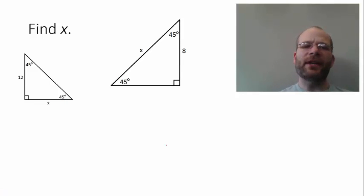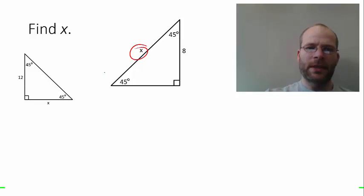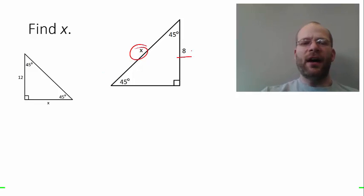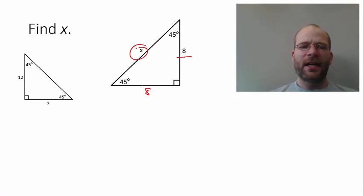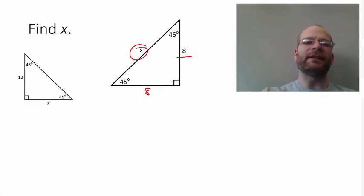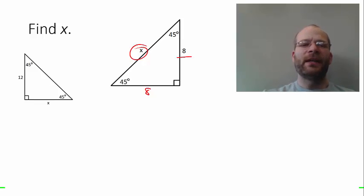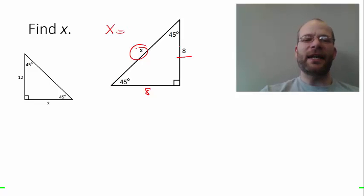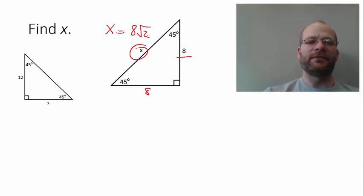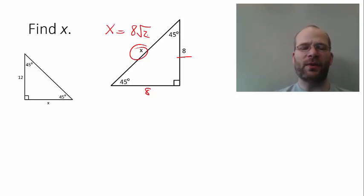In the next example, I'm trying to find the hypotenuse. I know one of the legs is 8, so I need to identify the relationship between the leg and the hypotenuse in a 45-45-90 triangle. The hypotenuse equals the length of the leg, 8, times the square root of 2. So the answer is 8 square root of 2.